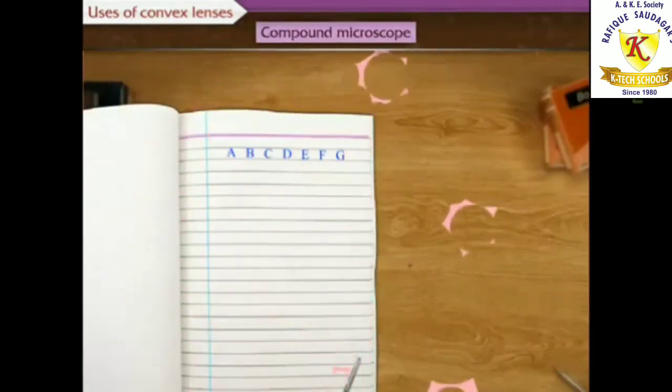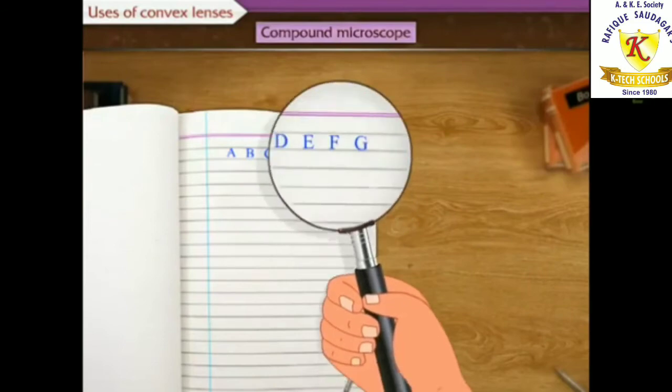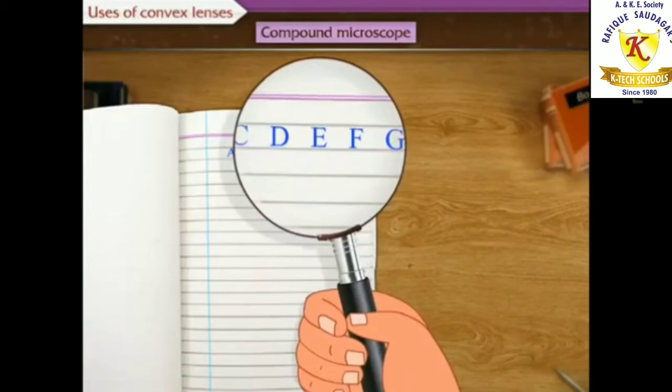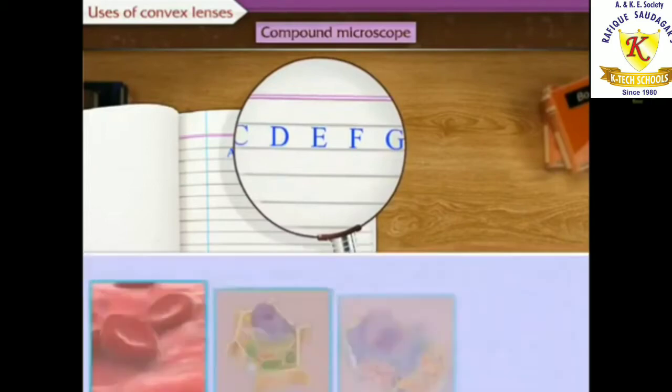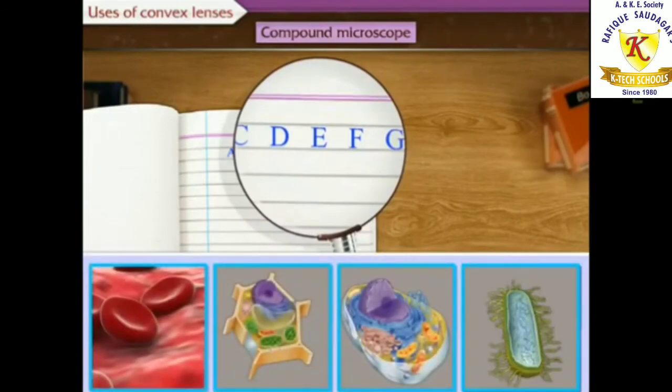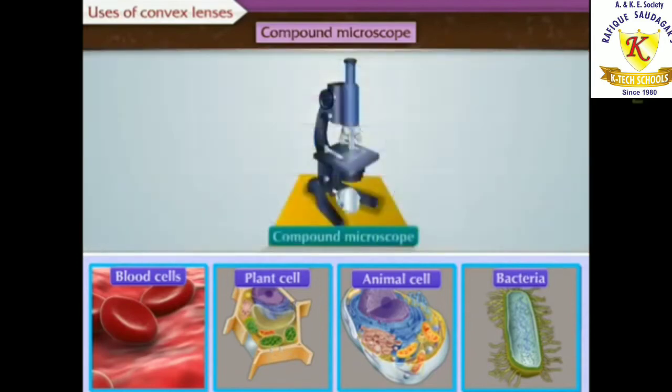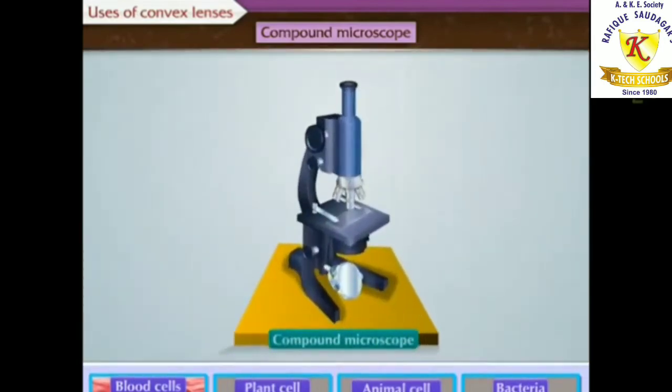Now, the second is compound microscope. Simple microscope is used to observe small sized objects. However, minute objects like blood cells, cells of plants and animals, and minute living organisms like bacteria cannot be magnified sufficiently by using a simple microscope. Compound microscopes are used.